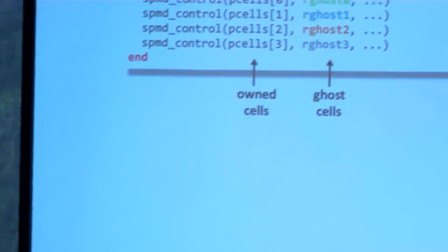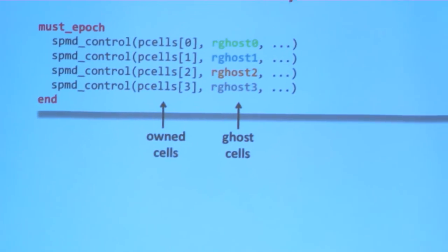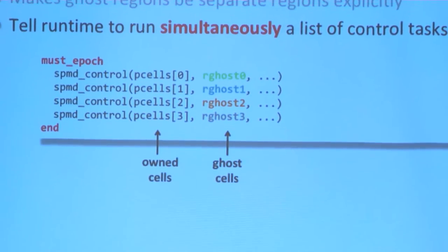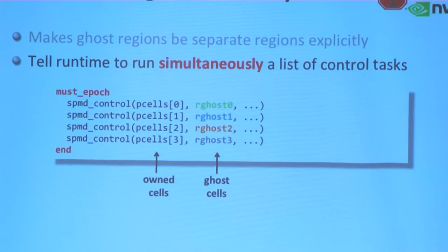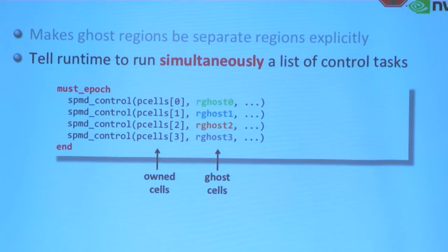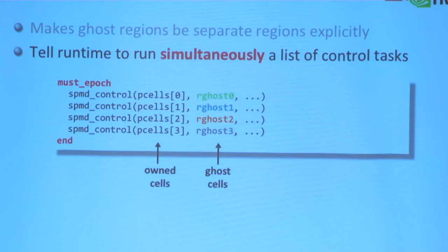You can actually launch different types of tasks in a must epoch. Here I only use SPMD control for four tasks, but you could use tasks F, G, H, I at the same time in the same must epoch, so they all launch simultaneously.